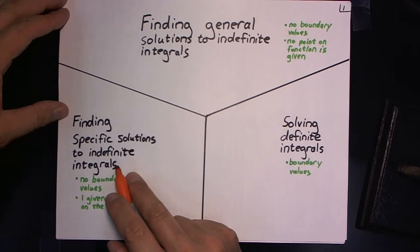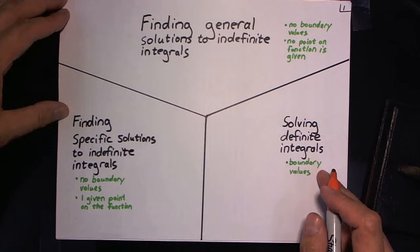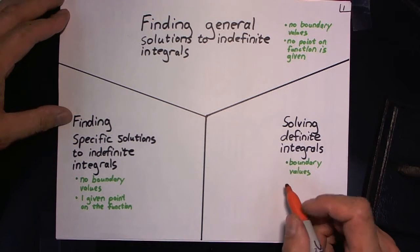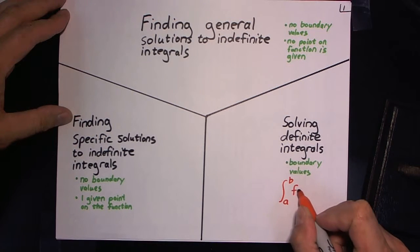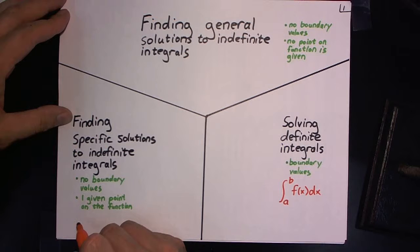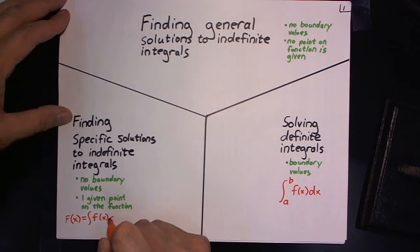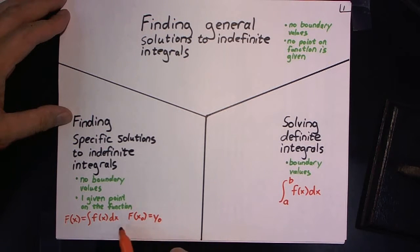In other words, you're going to have to solve for c. Last but not least, if you're solving definite integrals, then you're going to have boundary values. So what that's going to look like is a and b being your boundary values. What this is going to look like is you're going to be asked to say that capital F of x is equal to the indefinite integral of f of x dx, and you'll also be given f of x zero equals y zero. So you'll be given this one point in addition.